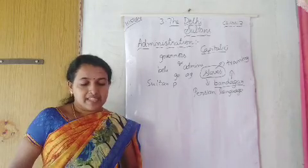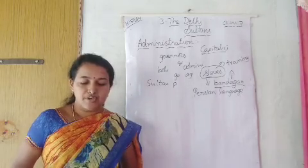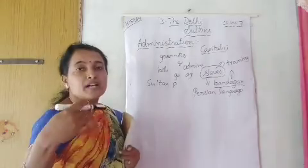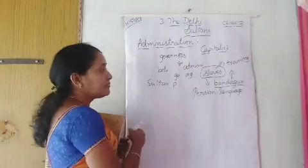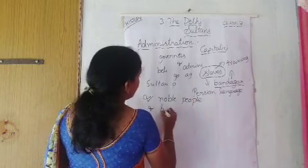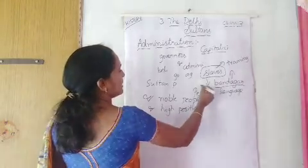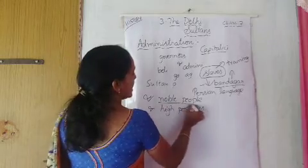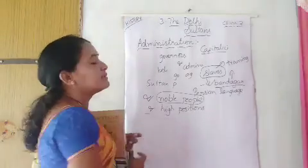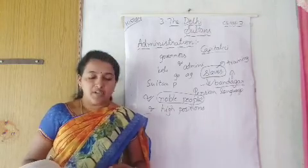The Khaljis and Tughlaqs continued to use Bandagan and also raised people of humble birth who were often their clients to high political positions. What Sultan Iltutmish did, the successor kings also followed the same process. But they also gave opportunity to trusted noble people in high positions — as generals and governors — while using Bandagan for normal office administration.